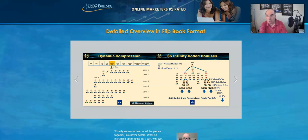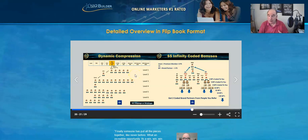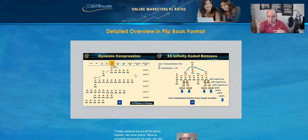But because of dynamic compression, those commissions that they would have earned actually come to you. So this is a fantastic way—as I say, you can literally double, treble, quadruple, five times or more your income from this one element of the income plan alone.